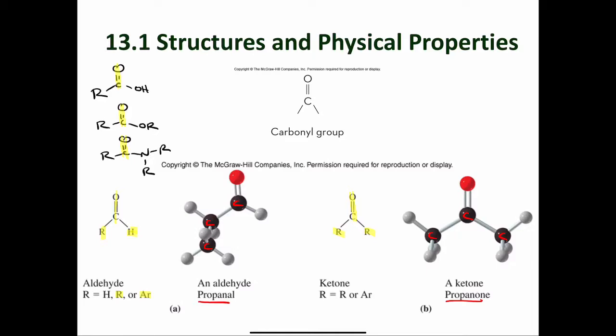So the dipole is going to point toward the oxygen. Another way to represent the dipole in a polar bond like our carbonyl group is to put delta plus by the carbon and delta minus by the oxygen. It doesn't mean the oxygen has a fully negative charge or that the carbon has a fully positive charge — the delta represents partial charges. Because oxygen is more electronegative, we put delta minus next to the oxygen. So the carbonyl group is a polar bond, and since carbonyl groups are present in aldehydes and ketones, we can conclude that aldehydes and ketones are polar compounds.